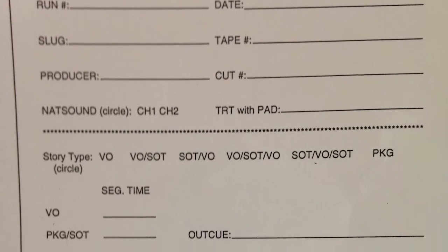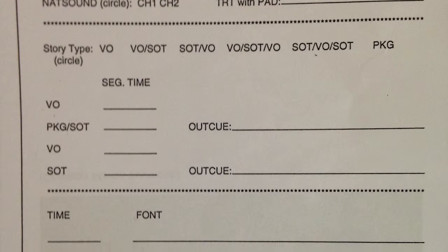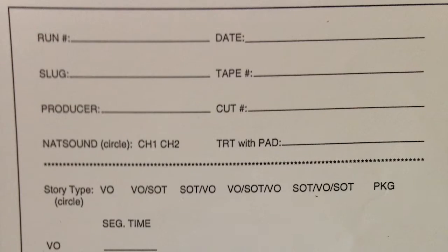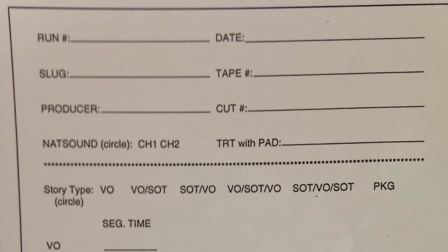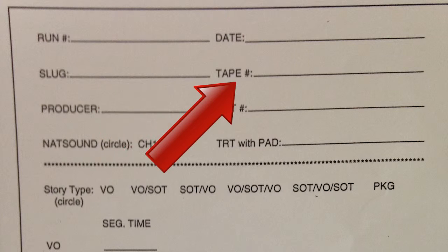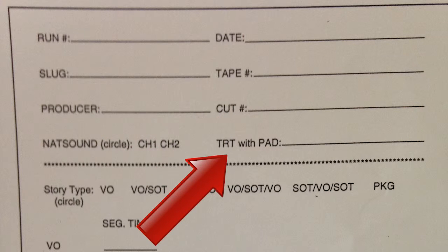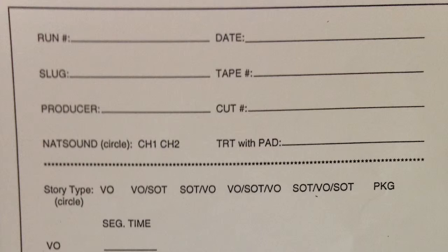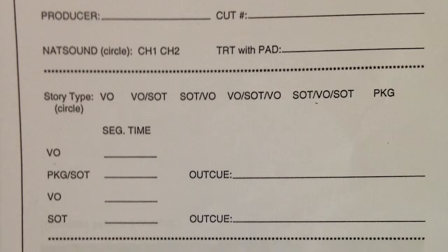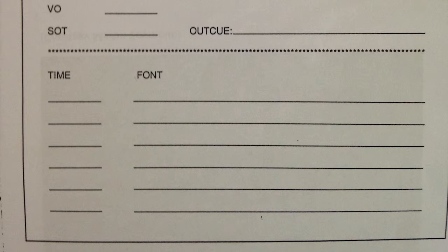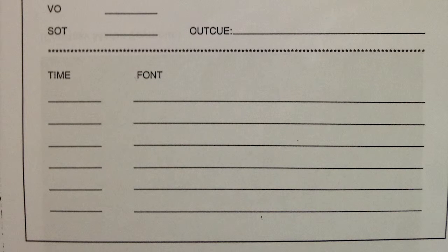A font sheet or clip sheet is used to consolidate clip information. The top third usually includes tape number, cut number, total running time, and sound information. The middle third conveys information about the type of clip and the timing of clip elements. The bottom third is where the graphics information is timed and written out.